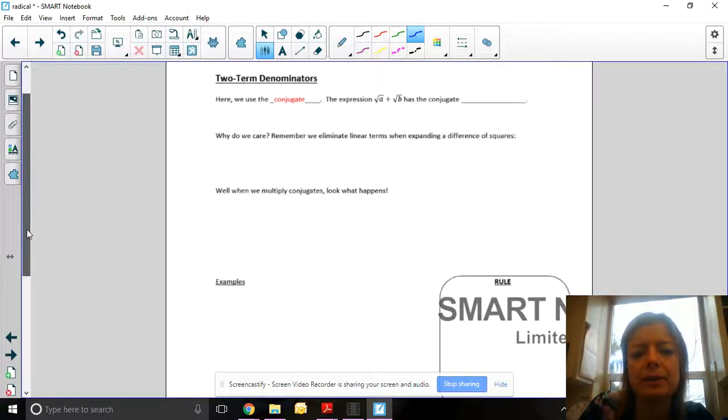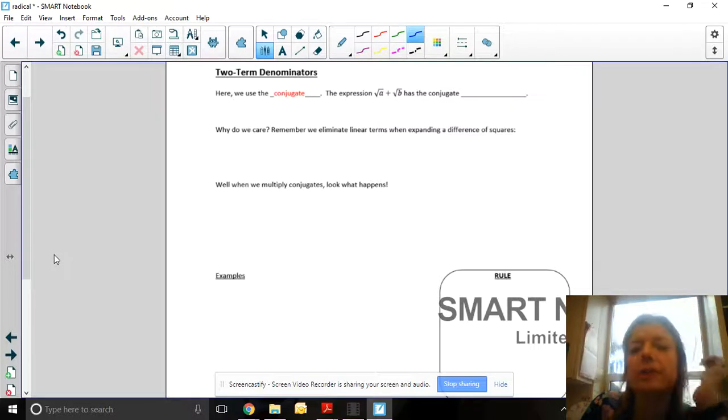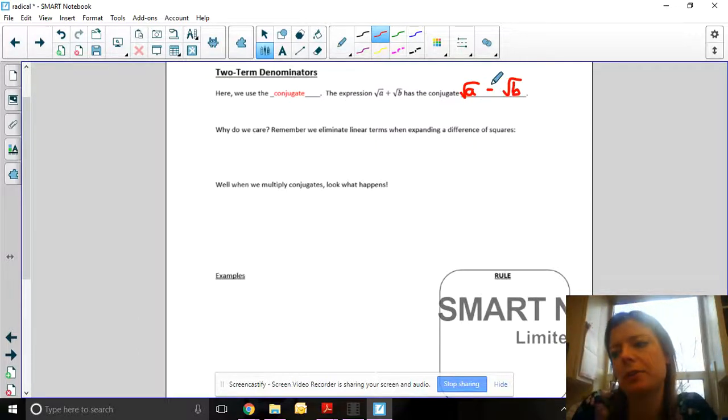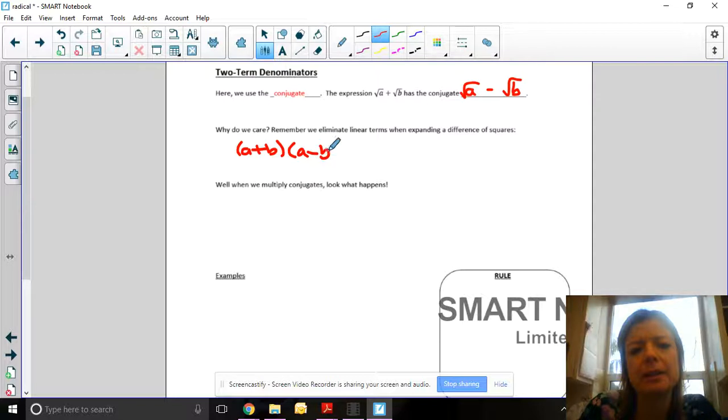What if your denominator has two terms? Here we use something called the conjugate. A conjugate is, if you have root A plus root B, its conjugate is root A minus root B. The same two numbers, just with the opposite sign in between them. Remember when we eliminate linear terms, if we have A plus B times A minus B, these are conjugate terms. When you expand this out, you get A squared minus B squared. You're just squaring each of the terms, and the middle term goes away.